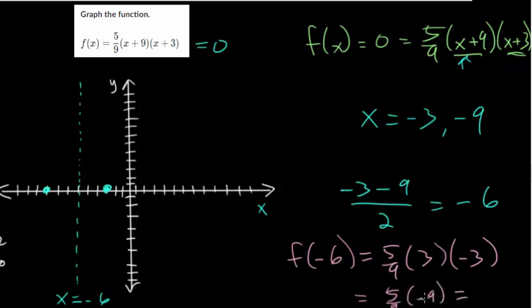And so you just have 5 times -1, which is -5. So our vertex, what we just found here, v for vertex,